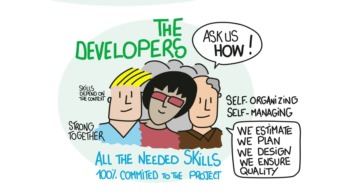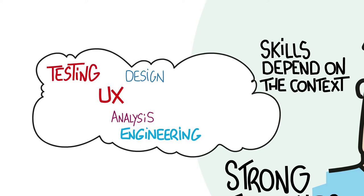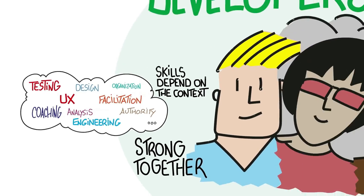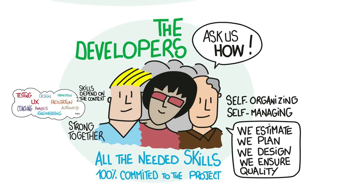The skills needed depend on the problem to solve. For software products, this often includes user experience, analysis, design, engineering, and testing, and may involve multiple different technologies. For organizational transformation, the skills may include coaching and facilitation, knowledge of the organization, authority to change the organizational structure, and access to senior leadership. The developers estimate the work because they do the work, and combining these estimates into schedules, release plans, and budgets is usually handled by the product owner.